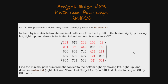Path Sum 4 Ways - as mentioned, this problem is a significantly more challenging version of problem 81. You can also go through that to understand the easier version. In the 5 by 5 matrix, the path sum from top-left to bottom-right moving left, right, up, and down is highlighted in bold red, equal to 2427. The top-leftmost cell is the starting point and we need to go to the bottom-right cell.